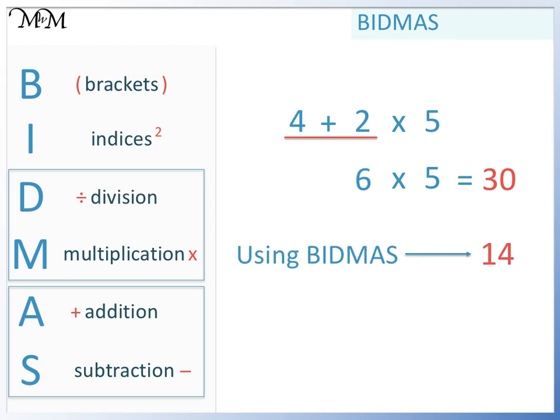We can't have two different answers for the same question. So we follow a set of rules. We use BIDMAS. 30 is an incorrect answer. And 14 is the correct answer.